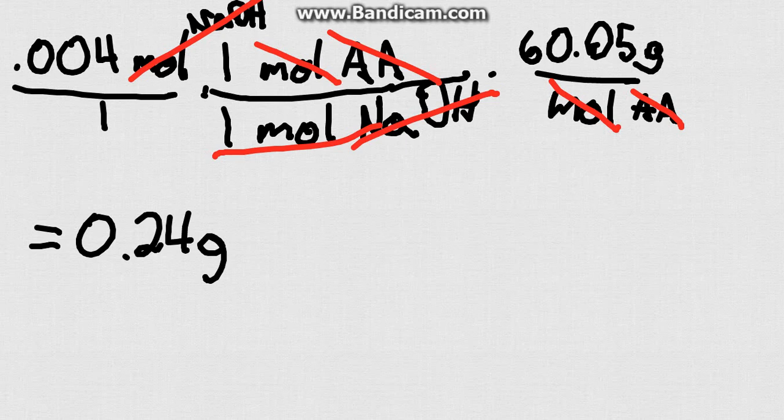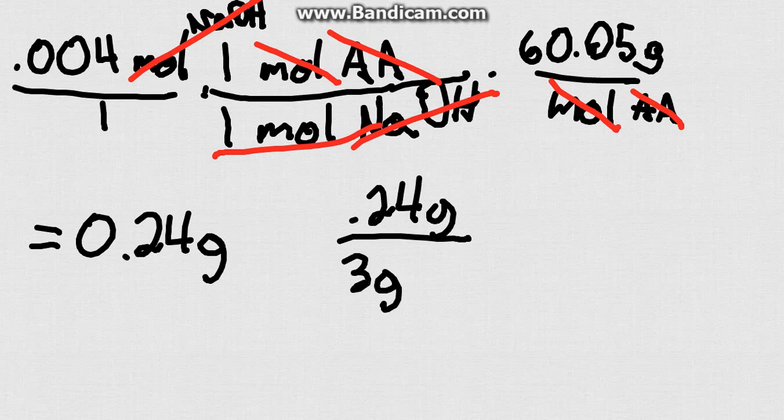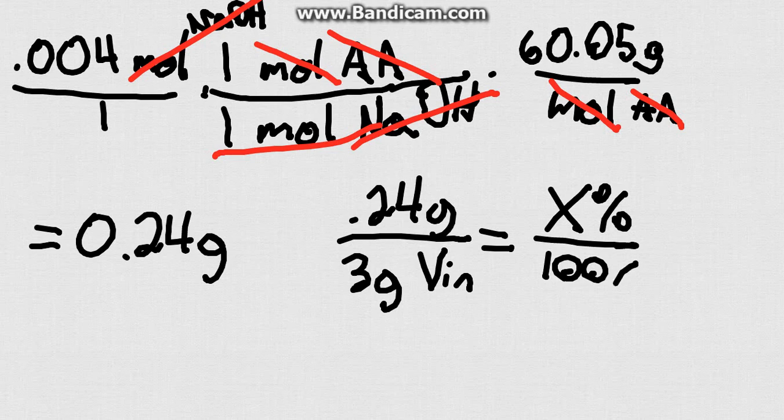Now we can set up a ratio to find out what sort of percent that's going to be equivalent to. So let's say we've got 0.24 grams of acetic acid. And let's say we used 3 grams of vinegar. Now we can find out what sort of percent we've got because it's going to be out of 100%. So you need to know how to rearrange this type of problem.